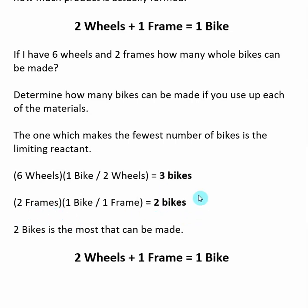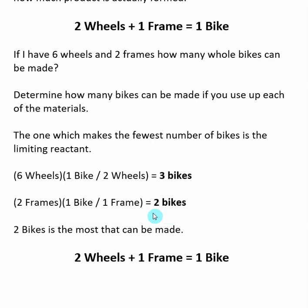So two bikes is how much product I can make. Frames limit how many bikes I can make — if I had more frames, I could make more bikes, so I have an excess of wheels. These calculations tell me what the limiting reactant is and, more importantly, how much product can be made.